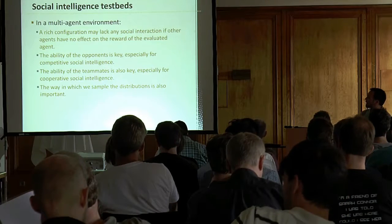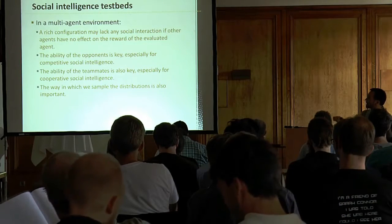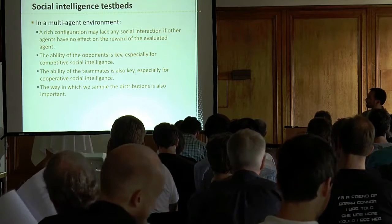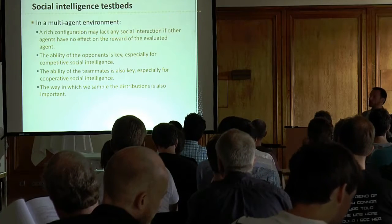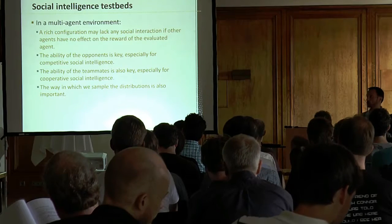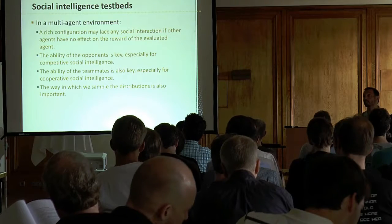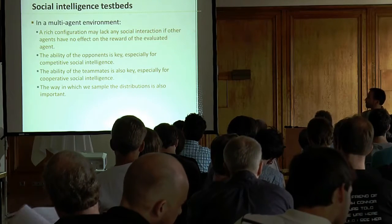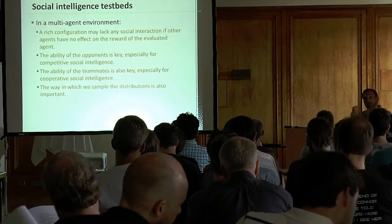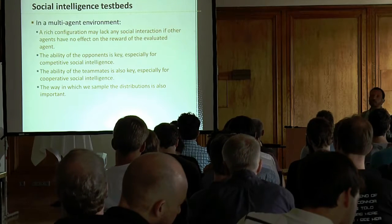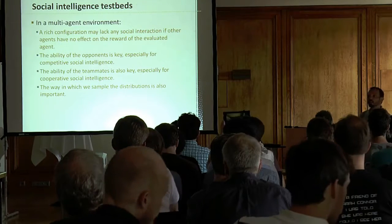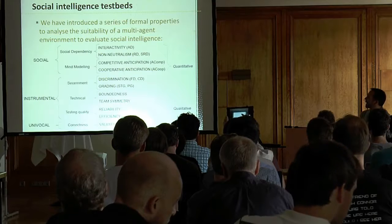The ability of opponents is key, but also the ability of teammates — especially when measuring competitive versus cooperative social intelligence. These distinctions appear very quickly in multi-agent systems: being socially intelligent in a competitive way is different from being socially intelligent in a cooperative way, and how these two abilities relate is extremely complex.